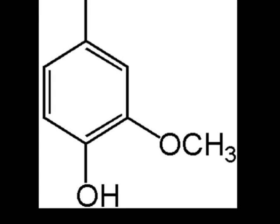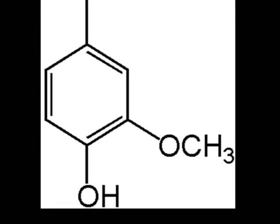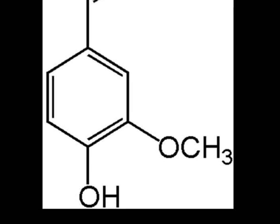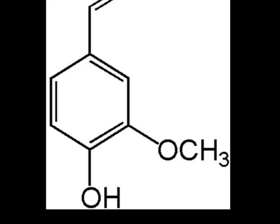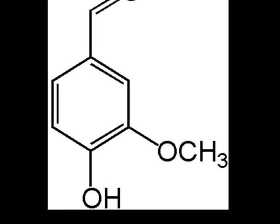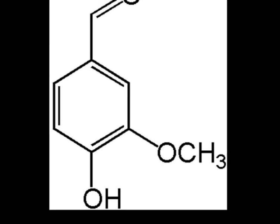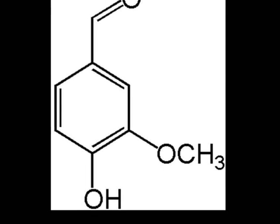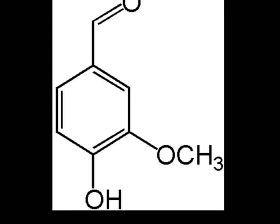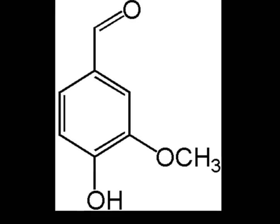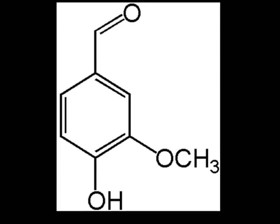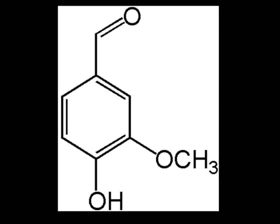Vanillin has two functional groups. The first is ether, where there is a carbon-oxygen-carbon bond. The other functional group is alcohol, which is the OH group.